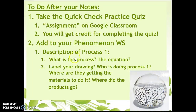Once you finish the quiz, add to your phenomenon worksheet — the worksheet with the closed ecosphere that we started last Friday. Add to the description of process one, which is photosynthesis. List the equation, what the reactants are, what the products are, label your drawing, identify what inside your ecosphere is doing process one, where they're getting the materials, and where the products go. If these two things are not finished during class, they are your homework. Just try the quiz — it doesn't matter how many you get right or wrong.